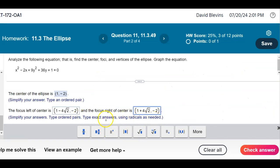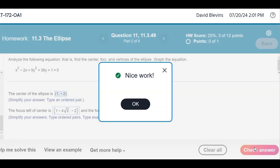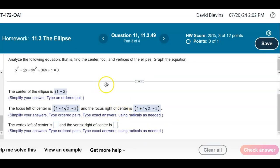Notice it says using radicals as needed, type exact answers. So it wouldn't allow you to put a decimal in there. You're going to have to make sure that you can get those exact values for the left and right focus like that.